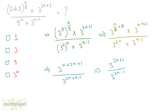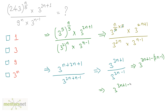Now I can apply the law a raised to m divided by a raised to n, which is a raised to m minus n. So this is equivalent to 3 raised to 3n plus 1 minus of 3n minus 1, which equals 3 raised to 3n plus 1 minus 3n plus 1. The 3n terms cancel, leaving 3 raised to 1 plus 1, which is 3 squared, and that is 9. So the answer is option C.